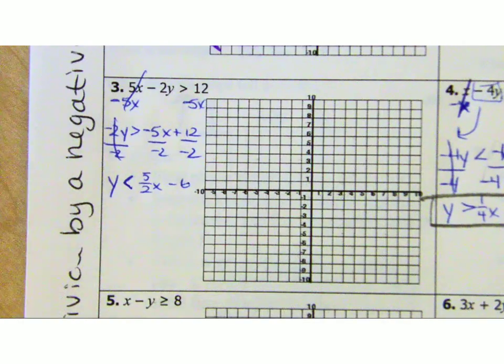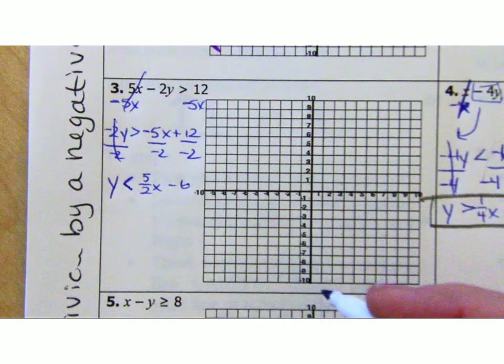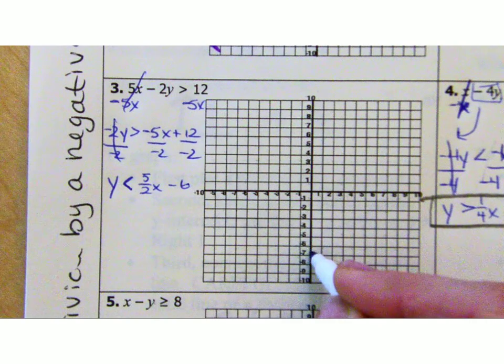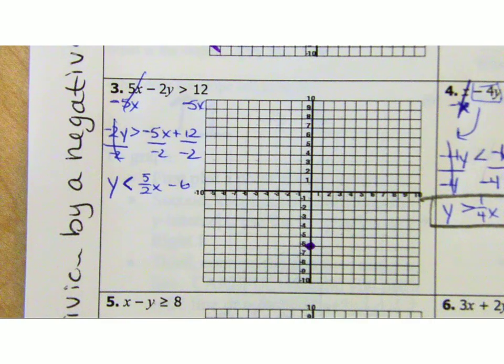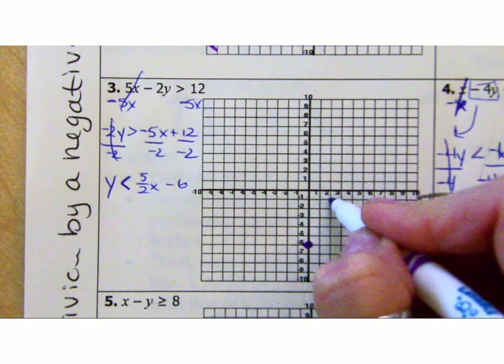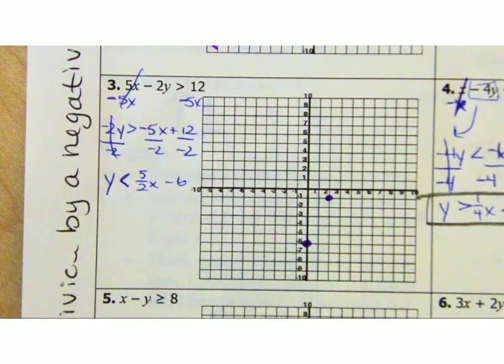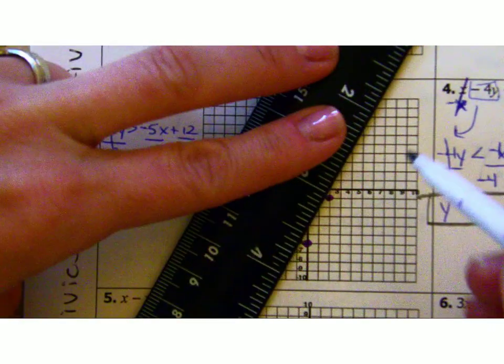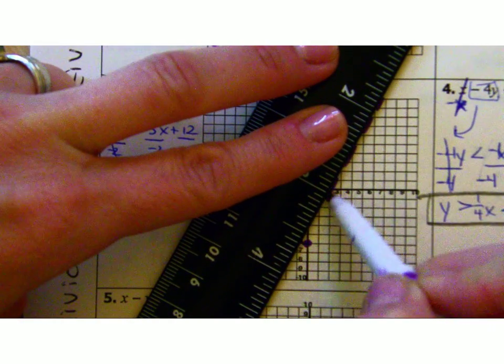So I'm going to start all the way down at negative 6. Where am I going from there? Up 5 over 2. Am I using a solid or a dashed line? Dashed line. Go all the way out. I got 2 more to show you after this one. We're done.